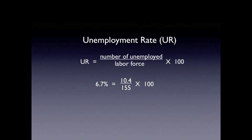The unemployment rate equals the number of unemployed divided by the labor force times 100. The number of unemployed is 10.4 million divided by 155 million for the labor force times 100, which equals a 6.7% unemployment rate.